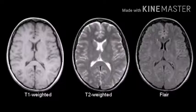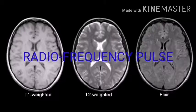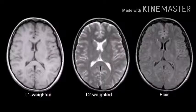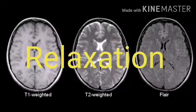Then a brief radio frequency pulse is applied to alter this motion. Once this radio frequency pulse is removed, these nuclei realign themselves with the main magnetic field — that is called relaxation. And in that process they emit a radio frequency signal that can be recorded.